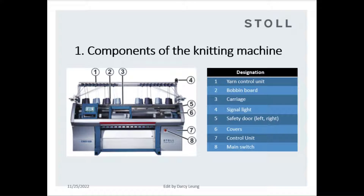The yarn control unit controls yarn tension and detects yarn break and yarn knots. 2, bobbin board that holds the yarn cone stable on the yarn platform. 3, carriage contains the cam box and yarn feeder stopper. 4, signal light: green indicates running at normal speed, yellow indicates running at low speed, red signal means machine stop.